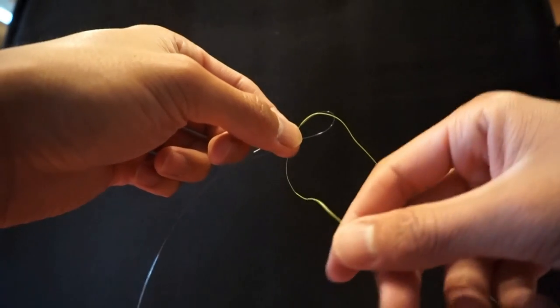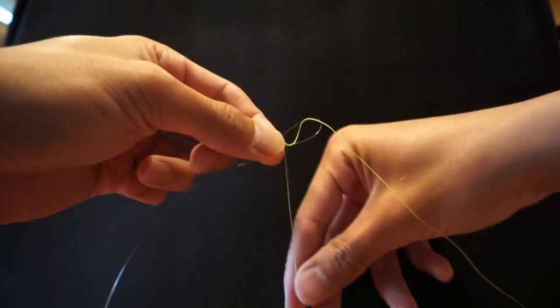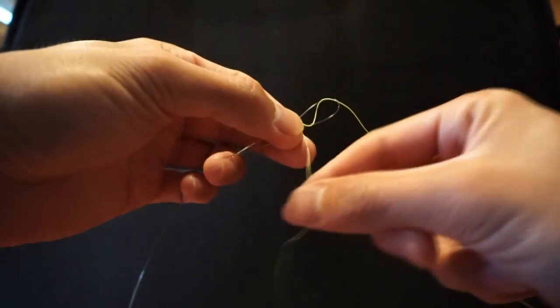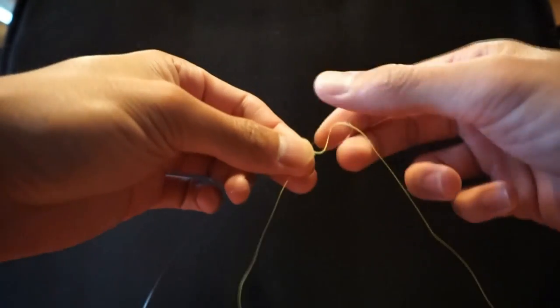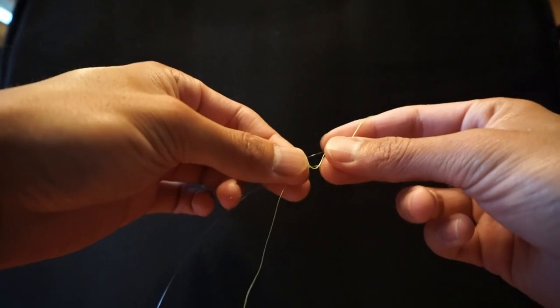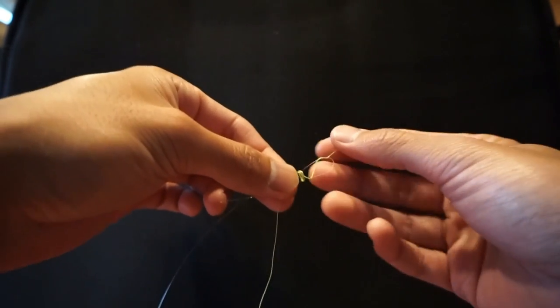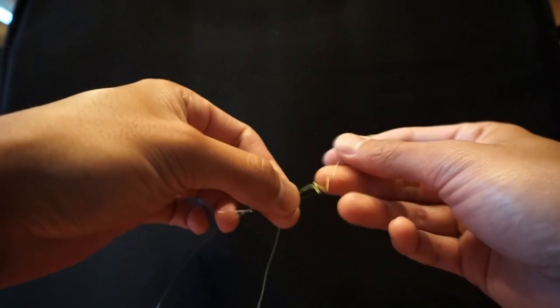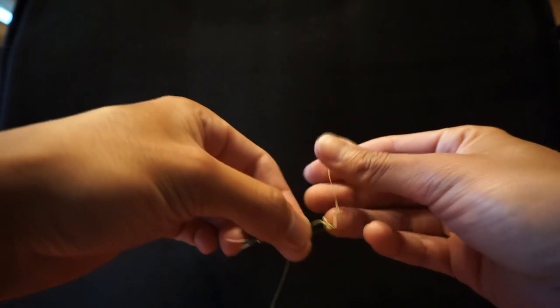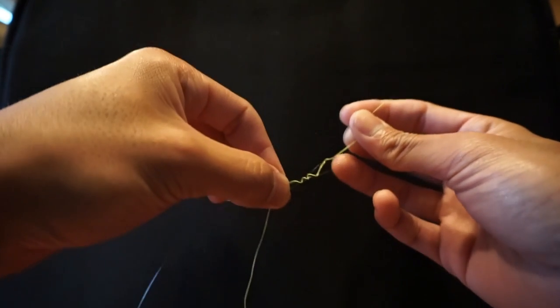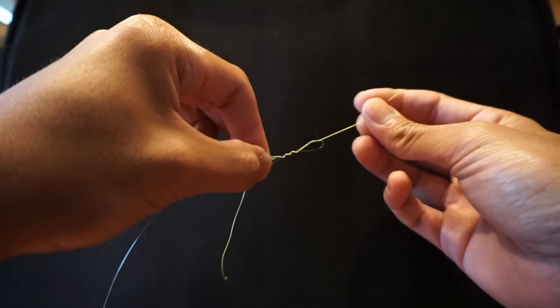Now you're going to need to wrap this braiding line around this loop, around six times. That's one, two, three, and you don't want the loops to overlap, so I've overlapped them. What I'm going to do is I'm going to pull on the braided main line right here, and the loops should straighten out.